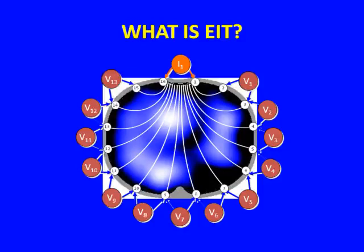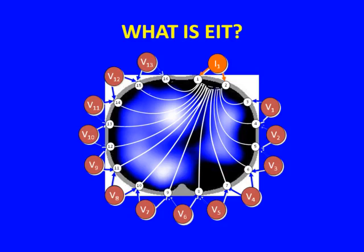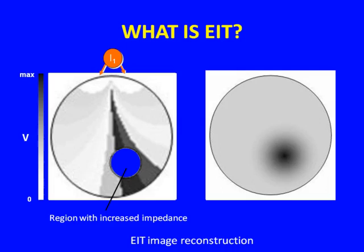Basically, if you have the first current applied to two electrodes, the others will get a signal based on the impedance of what is contained in the thorax. Then the current is switched from one couple of electrodes to another, and the signal is registered again from the rest of the electrodes. So if you have a region with increased impedance inside the field of view of the electrode belt, a set of currents will pass through and identify this region.